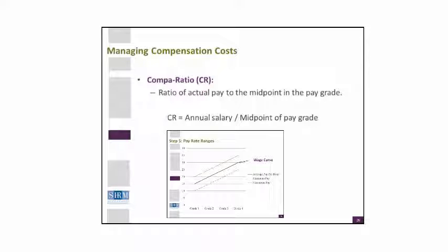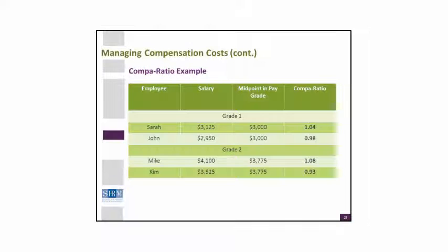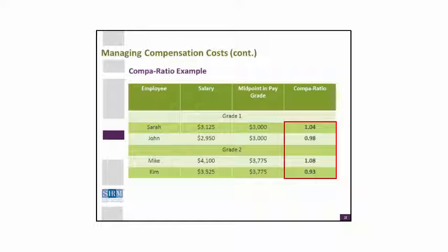The wage curve in this sense is the midpoint, or the average being paid in the marketplace. It's also about looking at what you're actually paying that individual and determining: what's the ratio? Is it below or above that wage curve? And why is that significant? As we look at how it's calculated, you can see an example here.